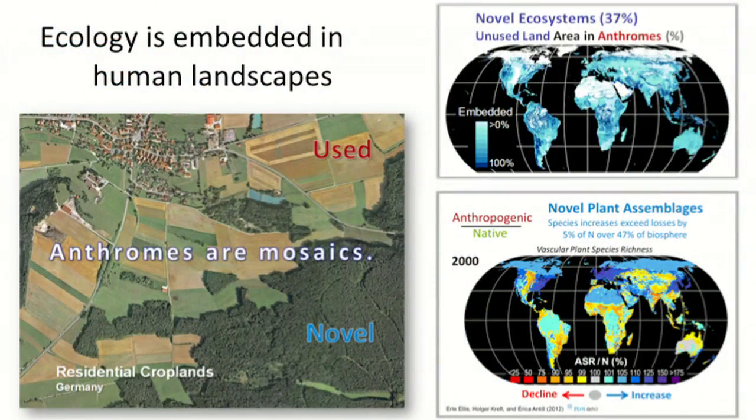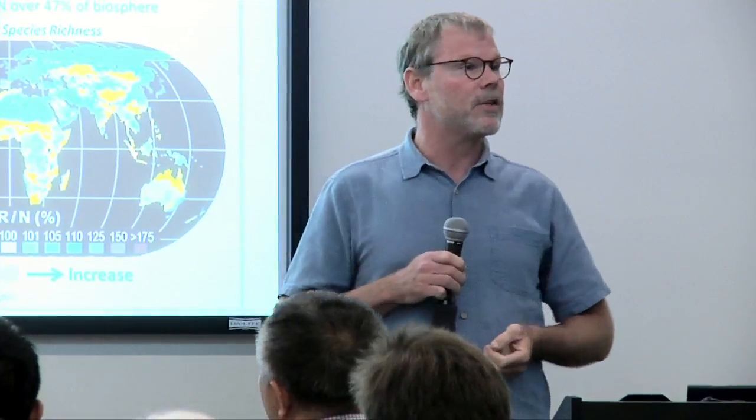All the ecology that we're looking at pretty much is embedded within human landscapes, human systems, and they're mosaics. You can look at crops, but those crops are within a larger landscape, a larger social context. You can look at deforestation — it's always occurring within a human context. It's not something that is just pixels of forest coming and going. It is a process of sustained interaction.